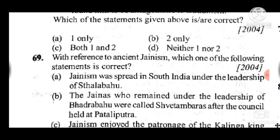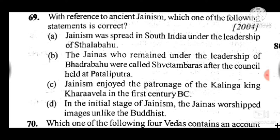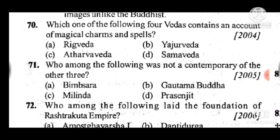Question 69: With reference to ancient Jainism, the correct statement is C — Jainism enjoyed the patronage of the Kalinga king Kharavela in the 1st century BC; the rest are incorrect. Question 70: Which one of the four Vedas contains an account of magical charms and spells? Answer is C, Atharvaveda. Question 71: Who among the following was not a contemporary of the other three? Answer is C, Milinda.